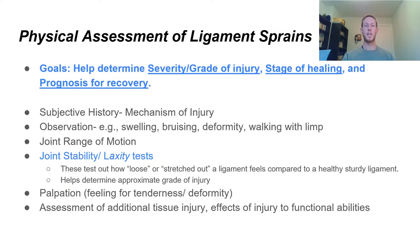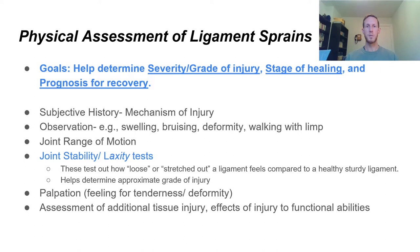When you come into the clinic for a physical assessment of ligament injuries, our overall goals are to determine the severity or grade of the injury, the stage of healing you're currently in, and your general prognosis for recovery. We take a thorough subjective history — asking how you injured yourself, probably in gross detail, putting our detective hat on to piece together what happened, what you felt at the time, any swelling. These questions help us diagnose you accurately.